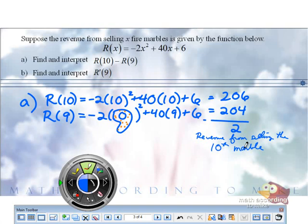So R(10) by itself means the revenue from the first 10. R(9) means the revenue from the first 9. So if you subtract the first 9 from the first 10, then you're just left with the 10th. Is that okay? And that's part A.